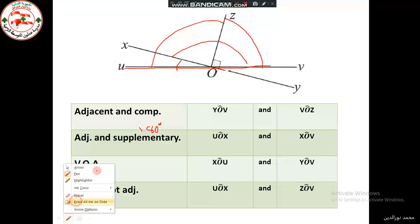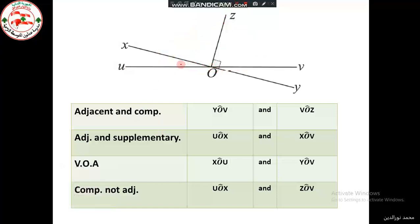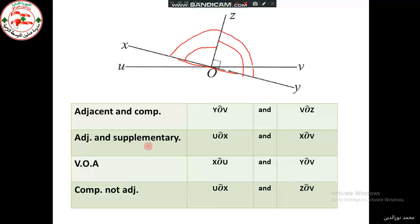There are also other examples. Looking at XOY, we have XOZ and ZOY. Or we could say XOV and VOY. These pairs are also adjacent and supplementary.